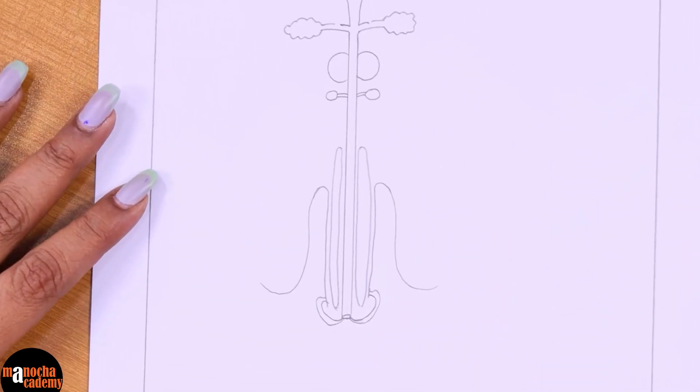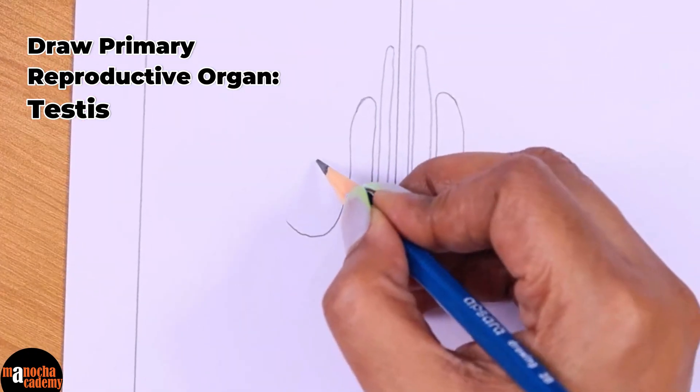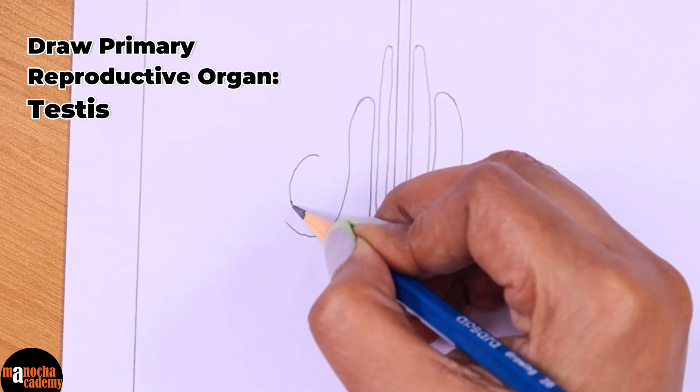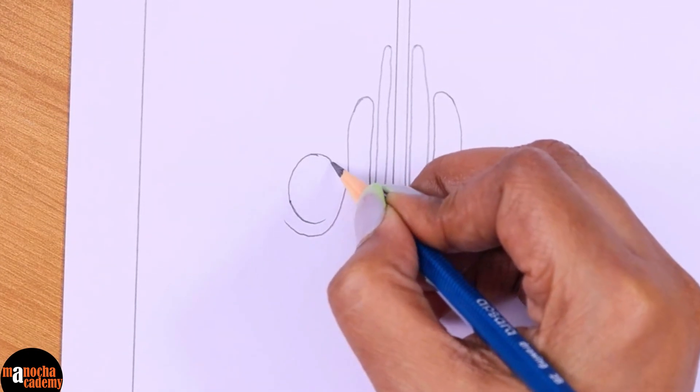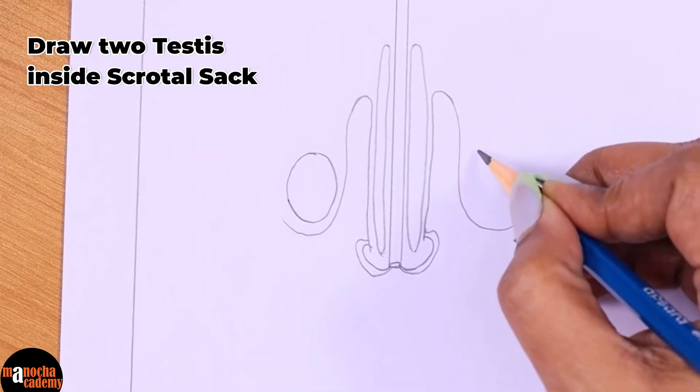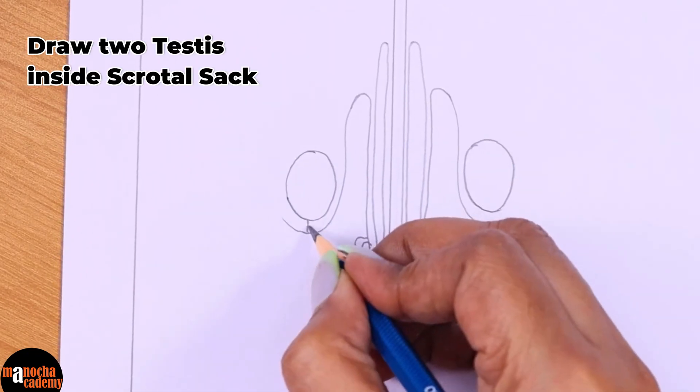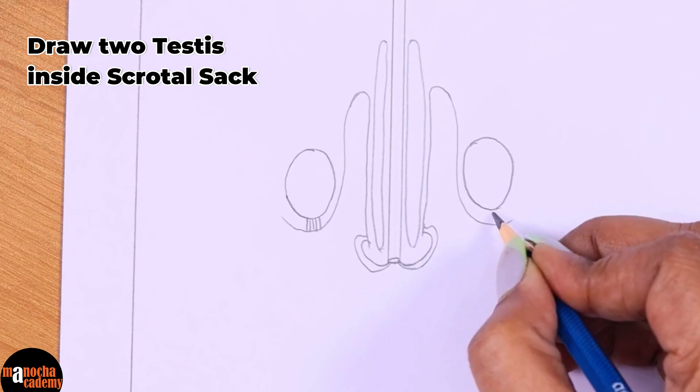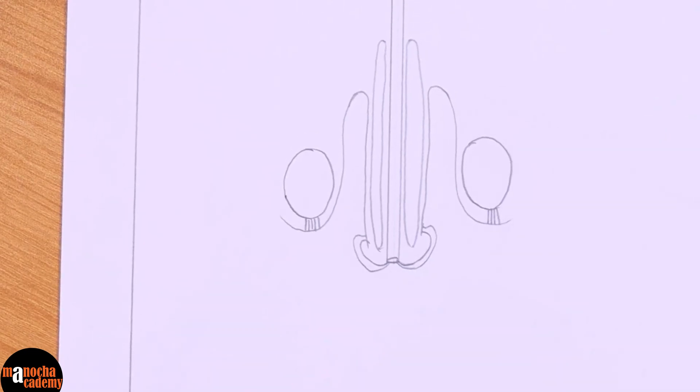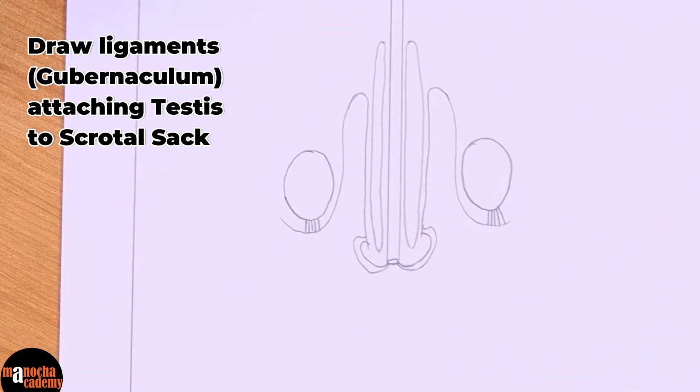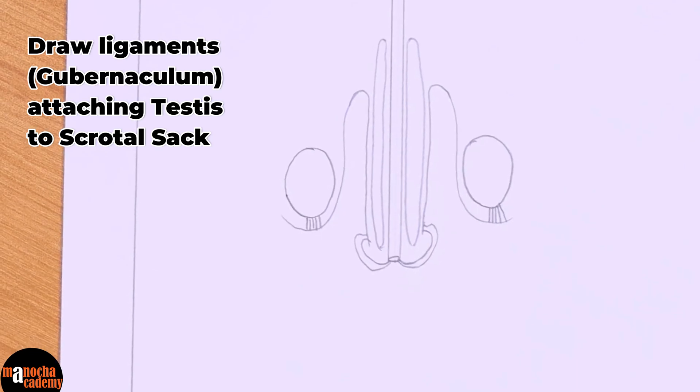Once you have drawn this axis, now it is time to draw the main reproductive organ which is the primary reproductive organ, the testis. Where shall we draw the two testis? We will draw the two testis here inside the scrotal sacs and we will attach the scrotal sacs to the testis with the help of lines. These are ligaments which are known as gubernaculum.